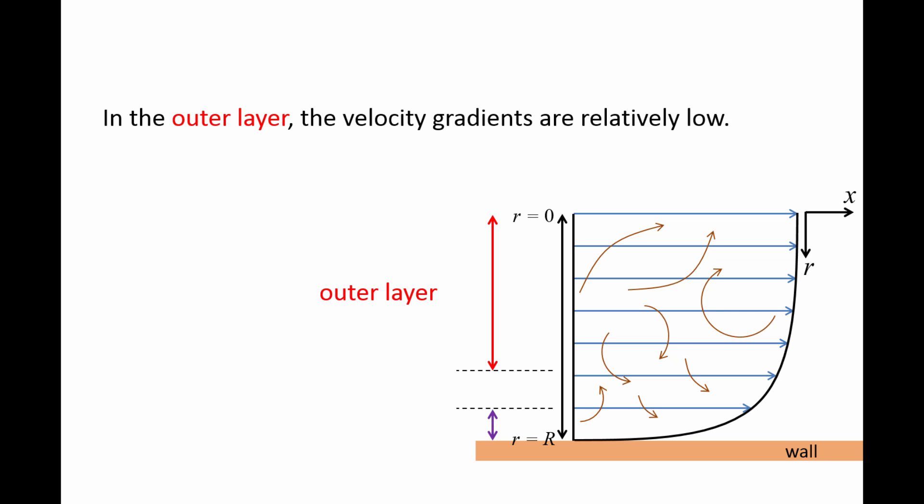In the outer layer, which consists of most of the flow, the velocity gradients are relatively low, and the turbulent shear stress term is much larger than the laminar shear stress term.